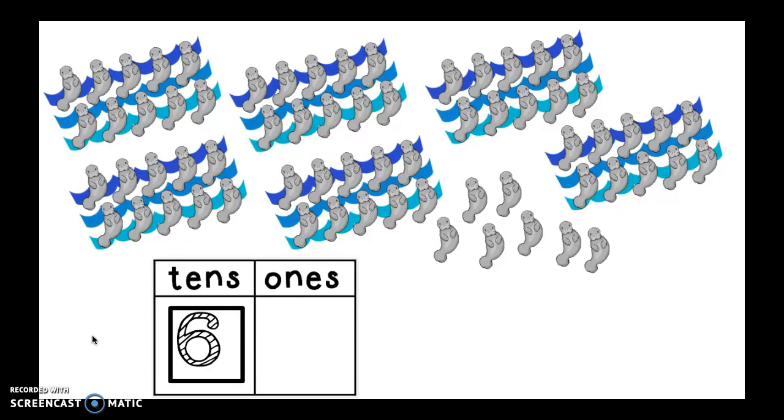And how many ones? Oh, good. I hope you counted carefully. One, two, three, four, five, six, seven. You know, they don't stand in five groups so I like them because they're just floating around in the water. So, I have to be really careful when I'm counting them. All right, so I have six tens and seven ones.